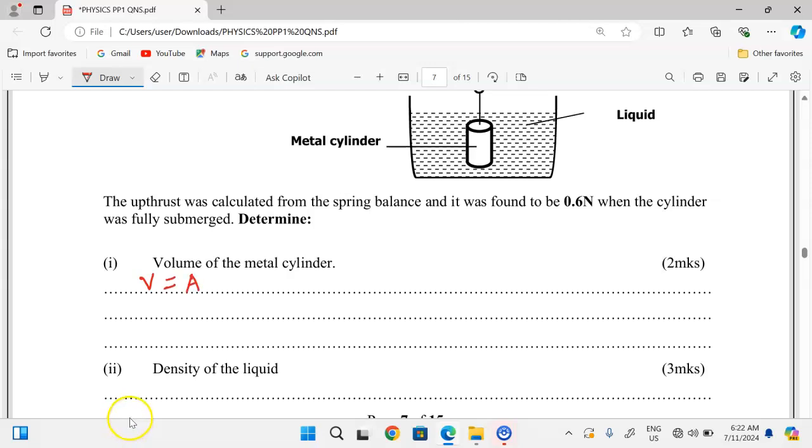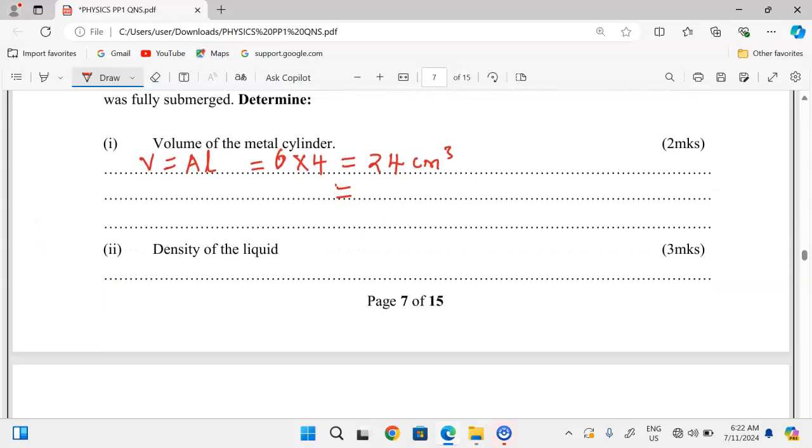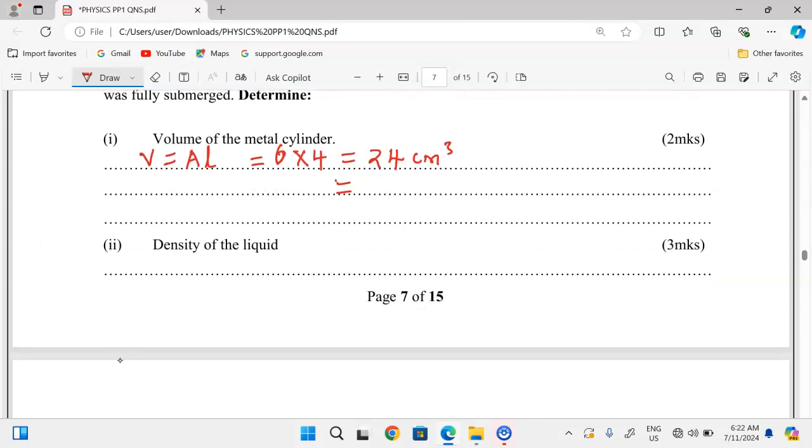Cross-sectional area times length. And so we need to take a cross-sectional area which is six, we multiply by a length of four, and this is exactly giving us 24. This is cubic centimeters.